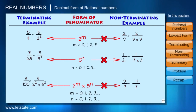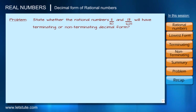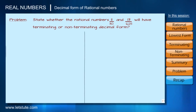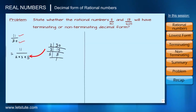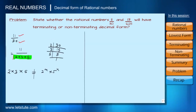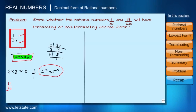Let's solve a problem: state whether 11/30 and 13/625 have terminating or non-terminating decimal forms. For 11/30: 11 cannot be factorized further, and 30 = 2 × 3 × 5. Since the denominator is not of the form 2^m × 5^n (it contains a factor of 3), the fraction 11/30 is non-terminating.